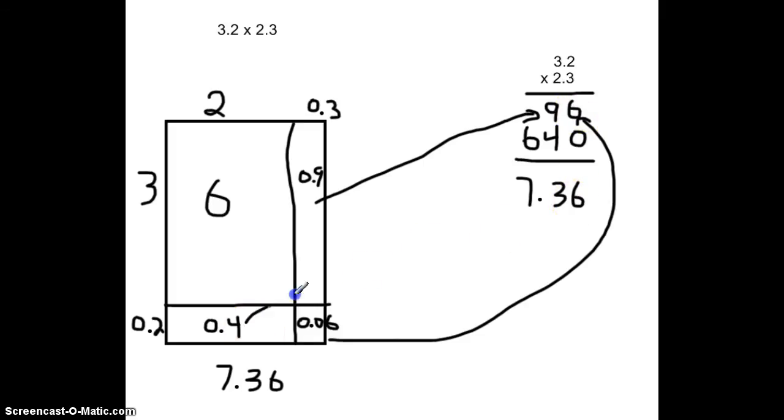Our 0.4 is going to be right here as the 0.4. And then, finally, our 6 is our 6 holes, which is here.